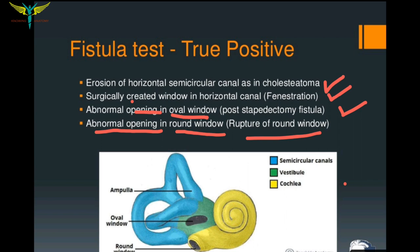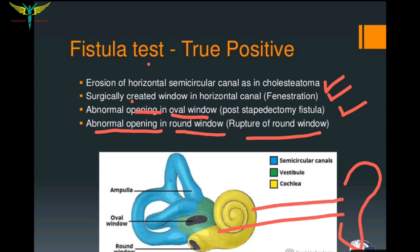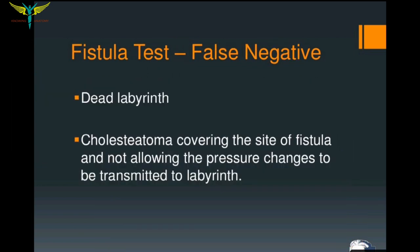The fistula test also becomes positive if there is an abnormal opening in the round window, such as in cases of rupture of the round window. In all these cases, there is a connection from the external auditory canal into the inner ear, which is why the fistula test comes positive — leading to nystagmus and vertigo. A positive fistula test also implies that the labyrinth is still functioning.